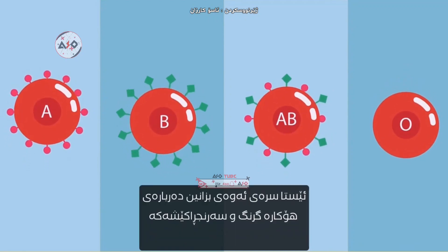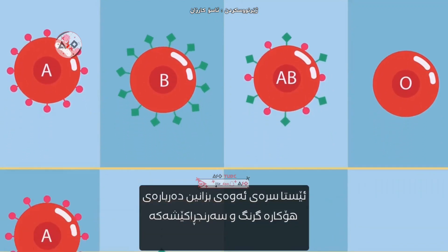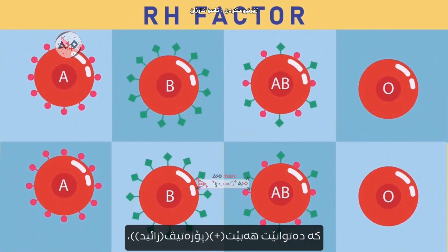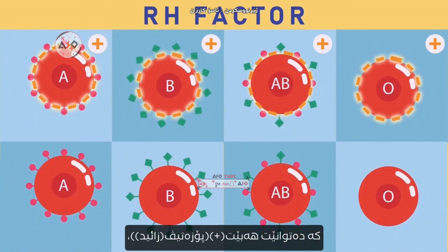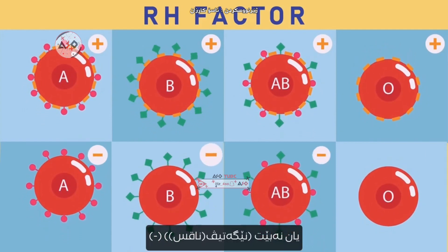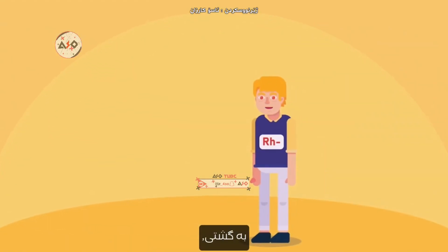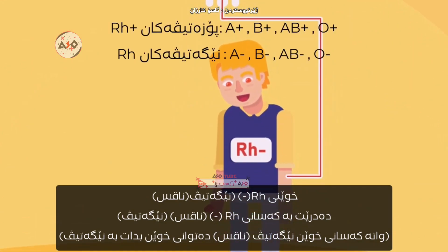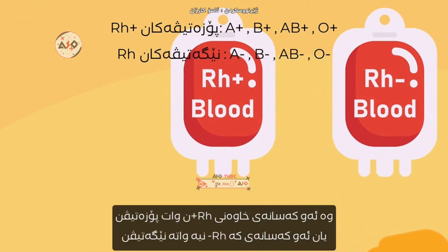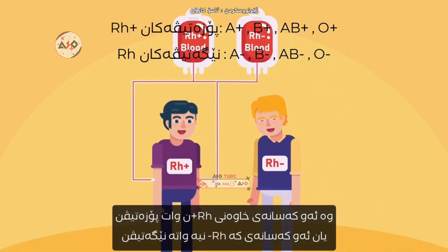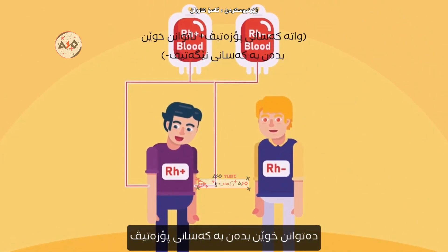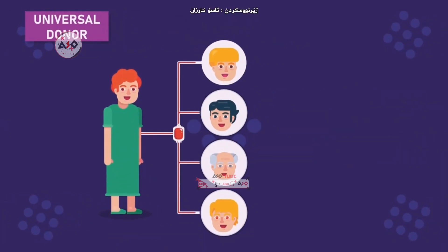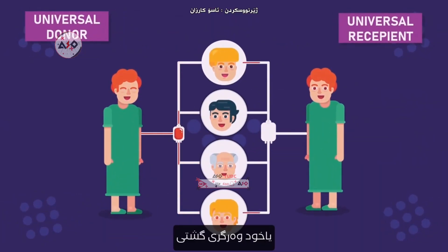The next important factor is the Rh factor, which can be either present (positive) or absent (negative). In general, Rh negative blood is given to Rh negative patients, while Rh positive or Rh negative blood may be given to Rh positive patients.